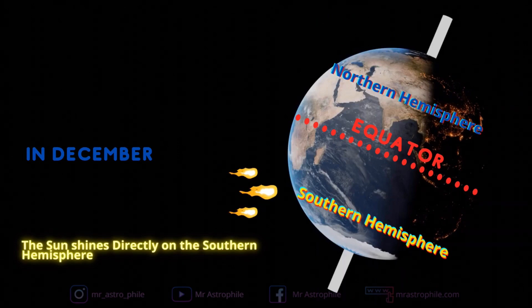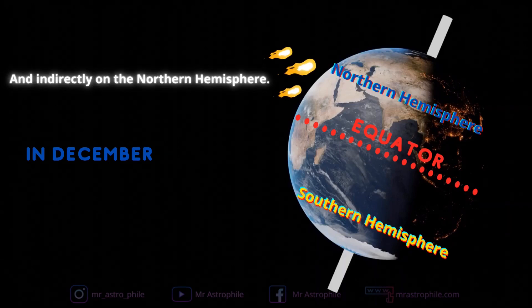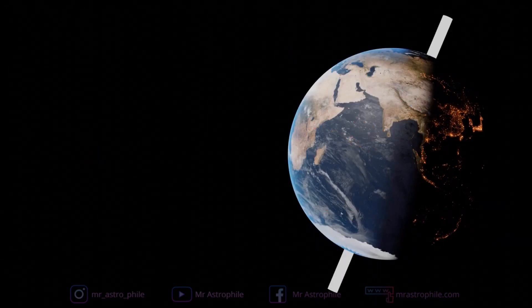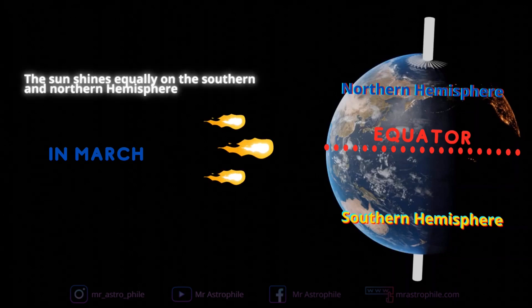The Sun shines directly on the southern hemisphere and indirectly on the northern hemisphere. In March, it is fall south of the equator, and the Sun shines equally on the southern and northern hemispheres.